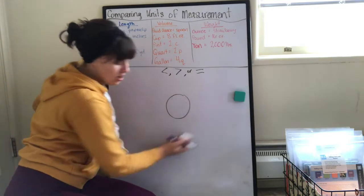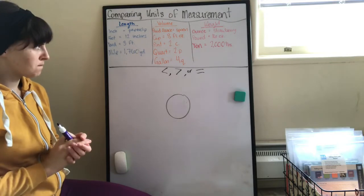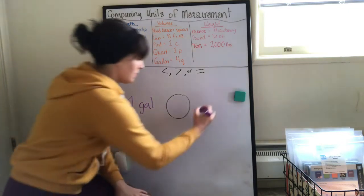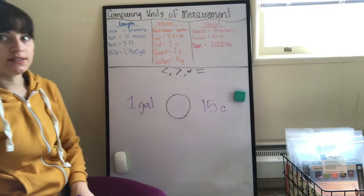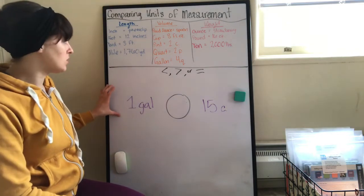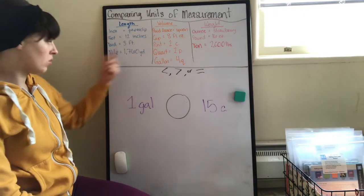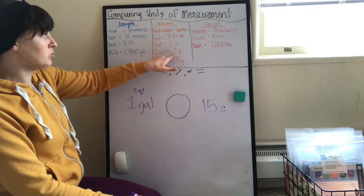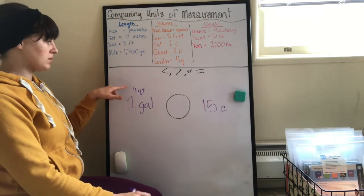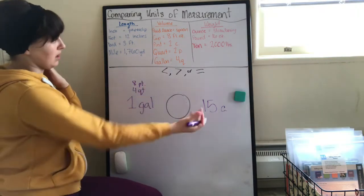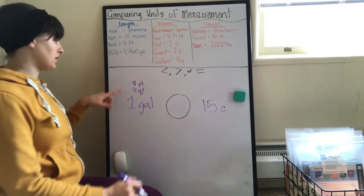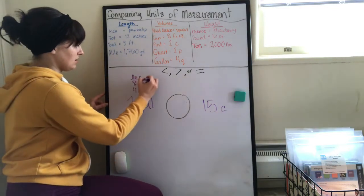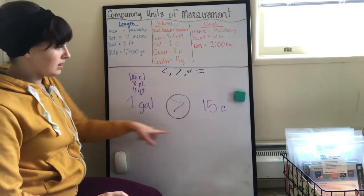Let's do a couple more examples. One gallon and fifteen cups. I have one gallon. One gallon equals four quarts. Quarts and cups, it's still not the same. One quart equals two pints, so I have eight pints. Pints and cups still doesn't help. For each pint I have two cups. Eight times two is sixteen cups. So what's bigger, sixteen or fifteen? Sixteen. So one gallon is bigger than fifteen cups.